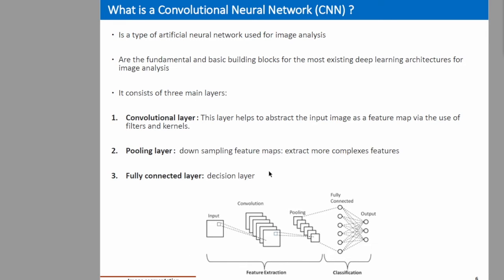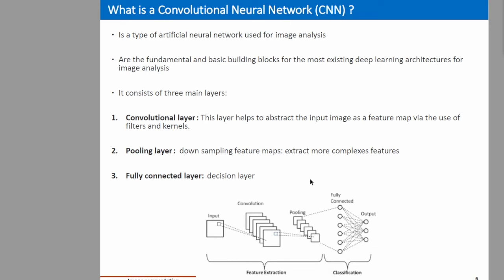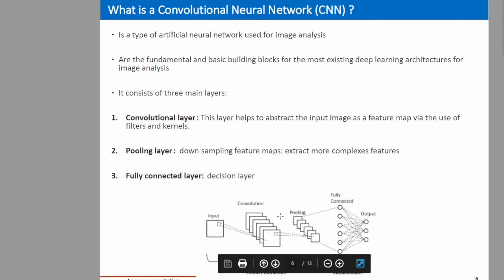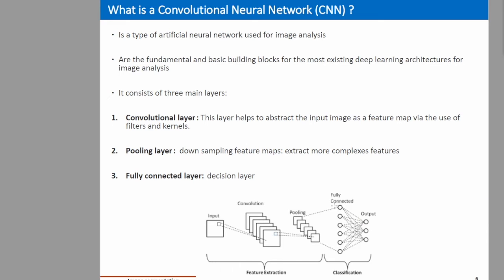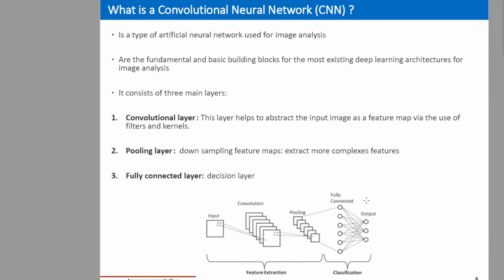The second block is the max pooling or pooling layer, where we perform down-sampling of the feature maps to extract more complex features. Another advantage of this pooling layer is to reduce the size of the image, which means reducing the computation time. Finally, the third main layer of the CNN is the fully connected layer, which is the decision layer — the neural network where we perform the classification task to produce the different outputs.